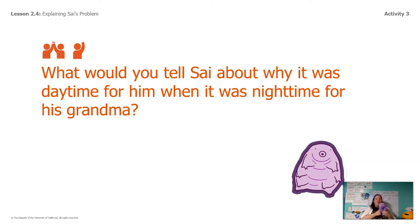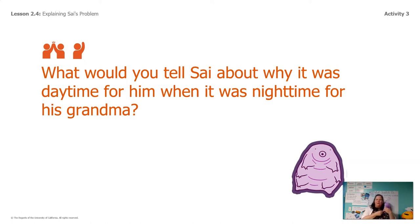For this next part you're going to need a buddy — just like I have my buddy Lavender here. You could have a real person to talk to too, you don't need a stuffy. So what I want you to do is talk to your partner about what you would tell Psy about why it was daytime for him when it was nighttime for his grandma. Take some time and explain with your partner what you would say to Psy. Pretend your partner is Psy and tell him what's going on.